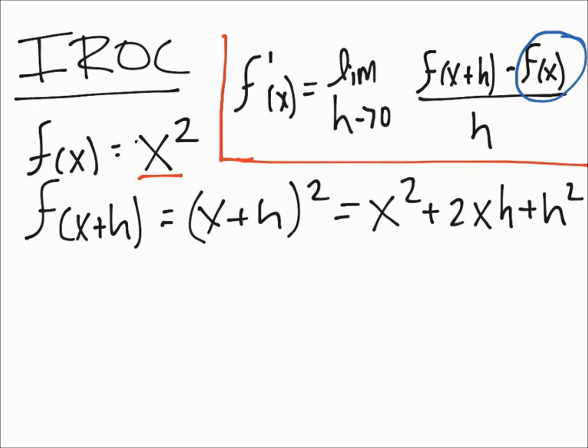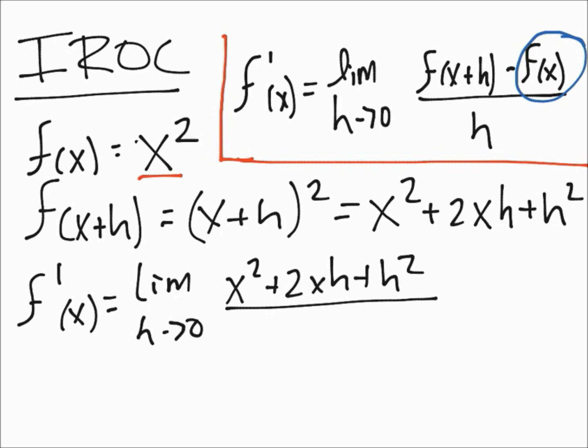f'(x) is going to be the limit when h goes to 0. This will be x² + 2xh + h² minus x² over h. So this x² will go with this x² and we will have 2xh + h² over h.